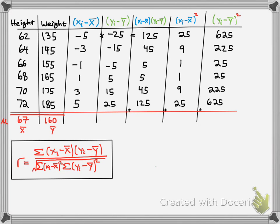Now what you do, notice how the r formula here has the sum of. So what we do is we're going to take the sum of the product of xi minus x-bar and yi minus y-bar. You add all those up, and you get 350. So 125 plus 45 plus 5 plus 5 plus 45 plus 125 gives you 350. Then again, notice how it's the sum of the xi minus x-bar squared. So you add all those digits up, and you get 70. Same thing with the y, and you get 1750.